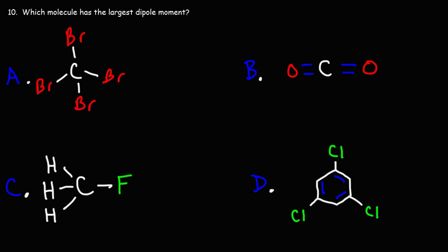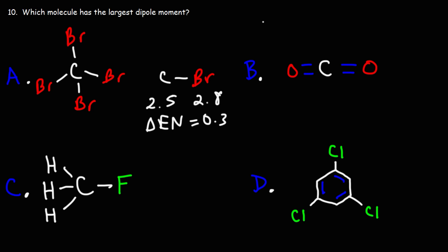Number 10: which molecule has the largest dipole moment — is it A, B, C, or D? Let's start with answer choice A, carbon tetrabromide CBr₄. Carbon has an electronegativity value of 2.5, whereas bromine has an electronegativity value of 2.8. The electronegativity difference is 0.3. In order for a bond to be polar, the electronegativity difference has to be equal to or greater than 0.5.